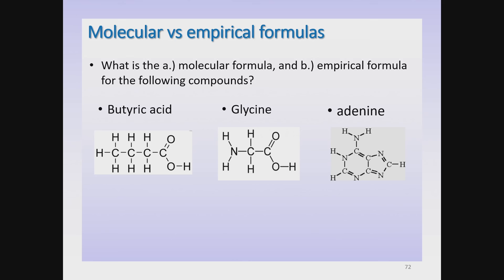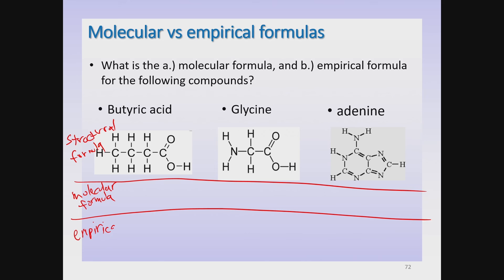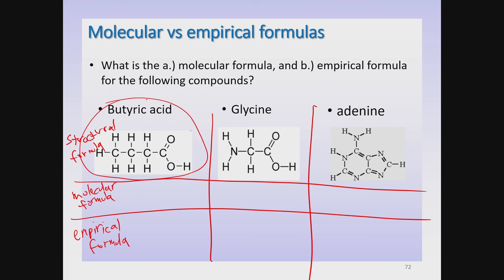Now let's do some problem solving. We have three molecules and we are given their structural formulas. For each we'll find the molecular formula and the empirical formula. Focusing on butyric acid: if you carefully count the atoms in that structural formula, you'll see there are four carbons, eight hydrogens, and two oxygen atoms — that is the molecular formula C4H8O2.